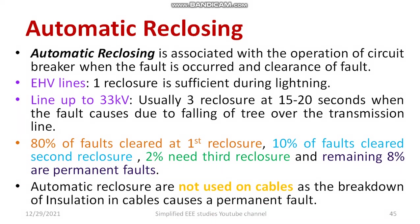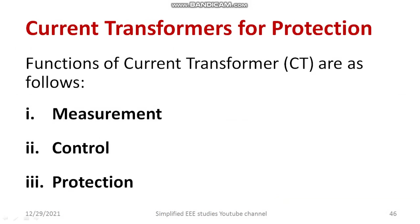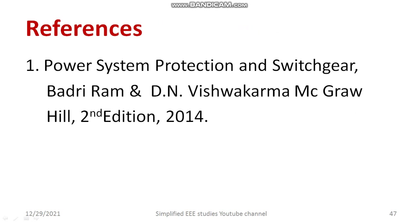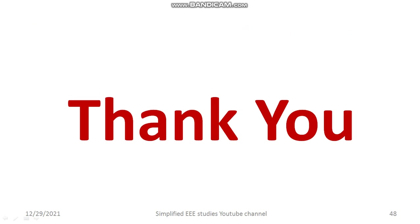This is what is called automatic re-closure. Regarding current transformers, there are different functions — especially to measure high current, for controlling purposes, and for protection purposes. Similarly, voltage transformers have similar functions and can measure high voltage. I have referred to the textbook on power system protection written by Badri Ram. If you have any queries, you can put them in the comment box. In this session, I discussed what is meant by automatic re-closure of a circuit breaker. Thank you very much for watching this video.